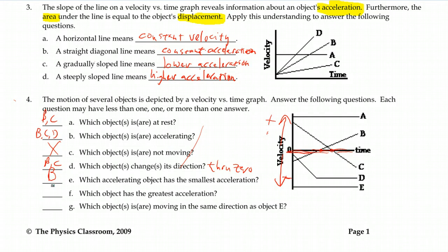The greatest acceleration, at least for a period of time, appears to be the steepest section right here in letter D. So steepest slope, greatest value of acceleration.